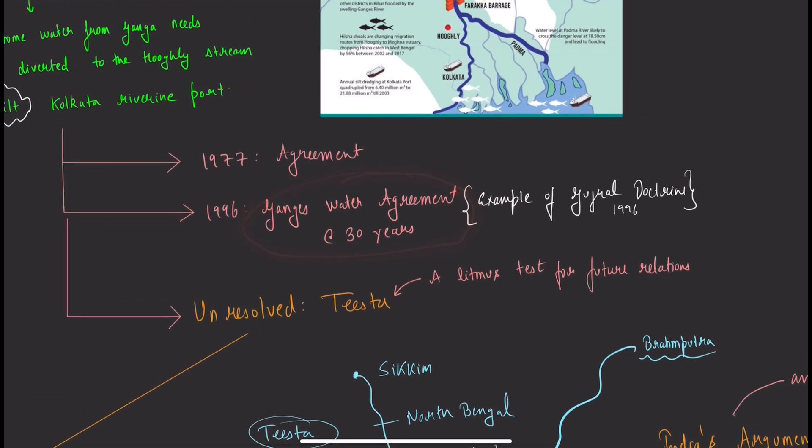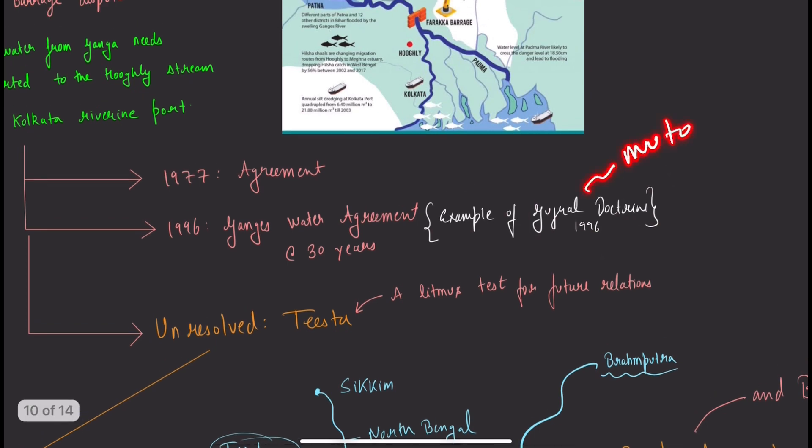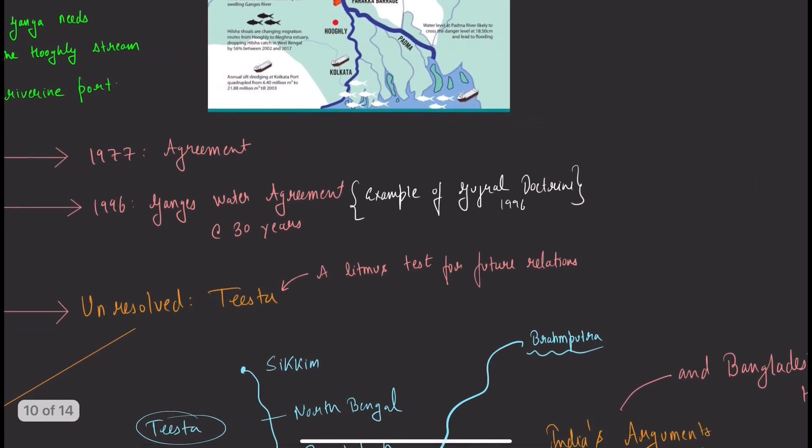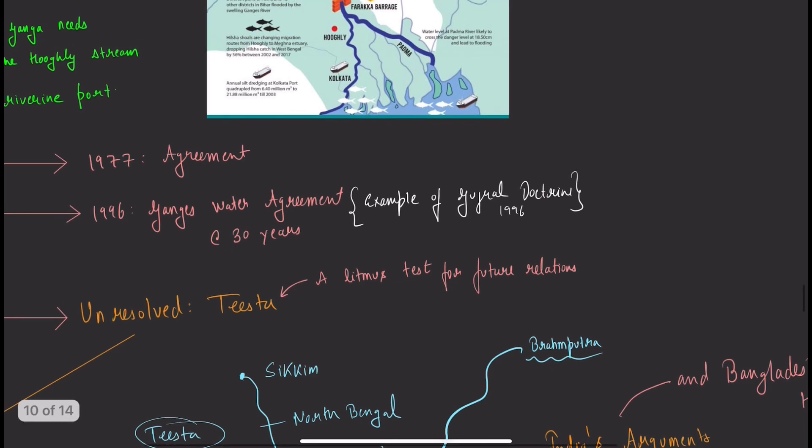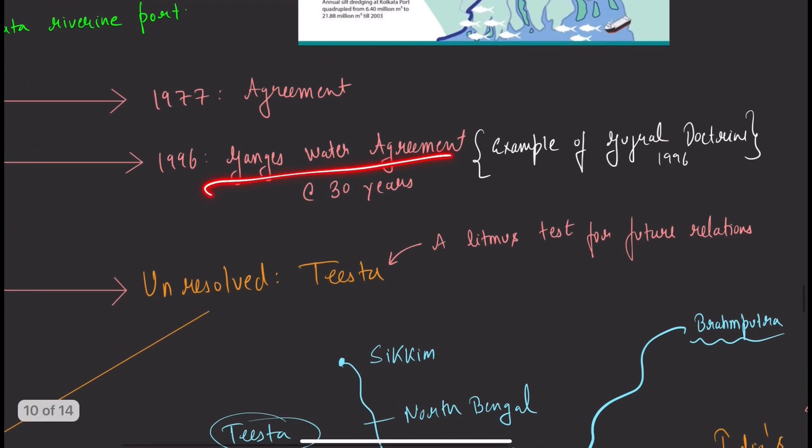In 1977 there was an agreement, and in 1996 the Ganges Water Agreement was signed for 30 years, until 2026. This was an example of the Gujral Doctrine based on mutual interdependence and non-reciprocity. As the upper riparian state and bigger country, we unilaterally took this step.